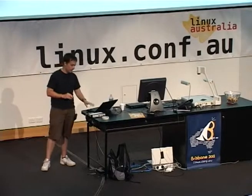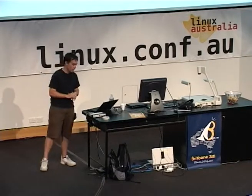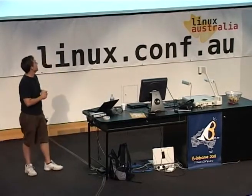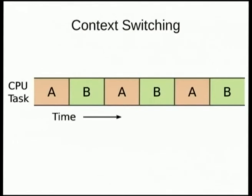Context switching — what do we currently do? A quick computer science operating system 101 overview. If you're running two tasks on a system, Linux will switch between them. If you've got task A and task B, we'll switch between them many times a second to make it look like they're both running at exactly the same time. That's context switching.